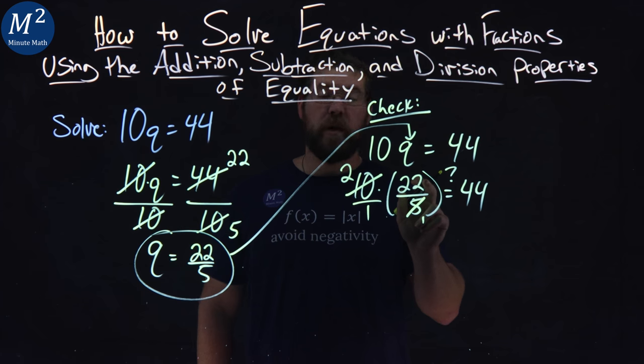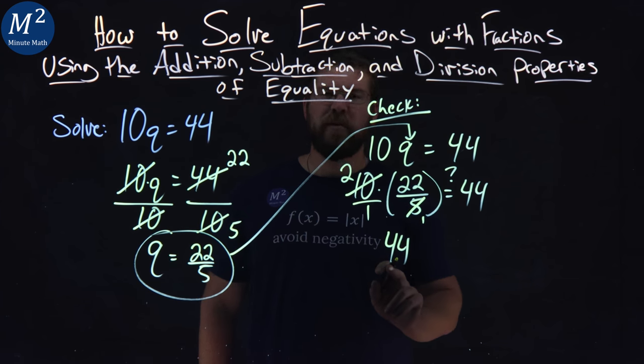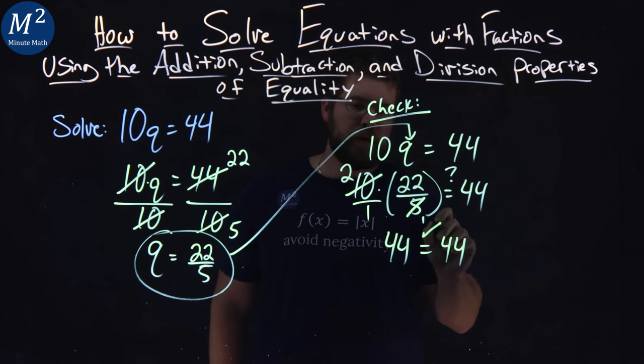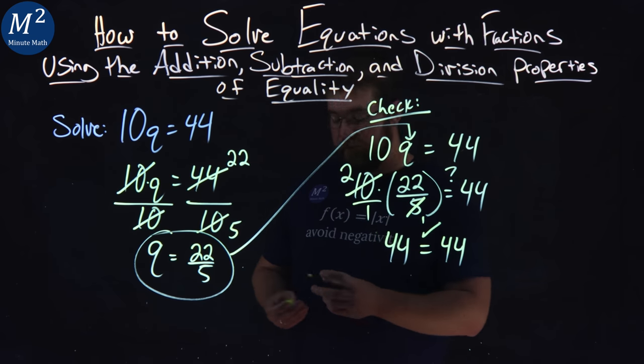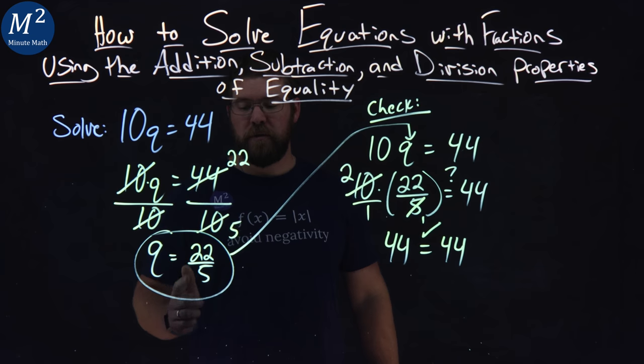Now 2 times 22 is 44. 1 times 1 is 1. Don't need to write that in the denominator. Equals 44. Left and right hand side clearly are equal, both being 44, confirming that the answer to our equation is q equals 22 over 5.